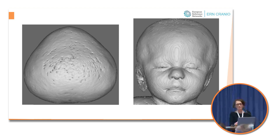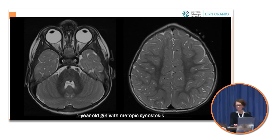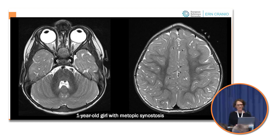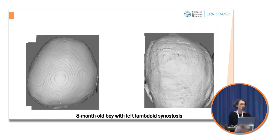Here is an example of a young girl with metopic synostosis and the typical trigonocephaly. You can also see it on the axial slices with the typical bony ridge in the frontal region and the hypotelorism. This 3D rendering can be done at the push of a button in nearly all PACS systems.